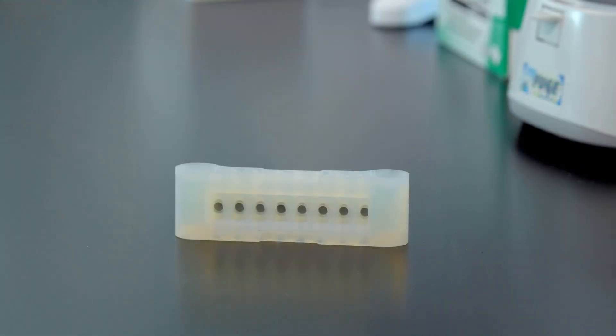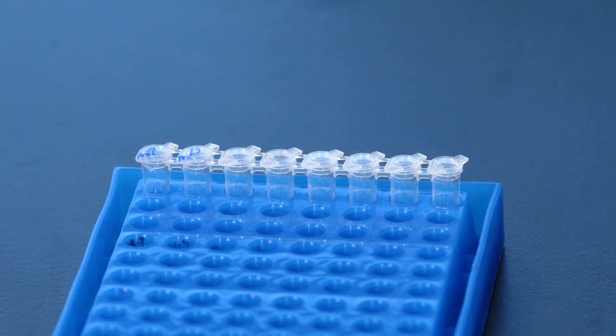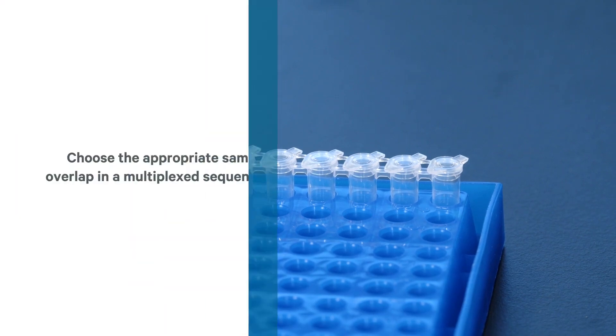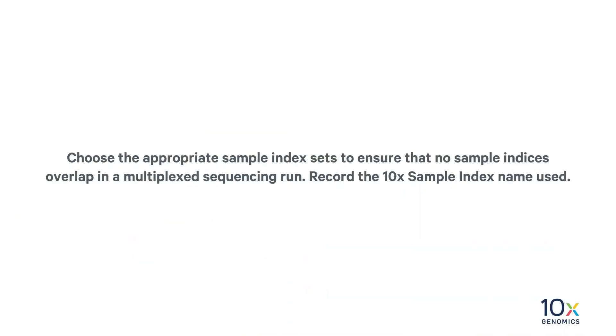We have a 10x magnetic separator and the samples in an eight-tube strip. Choose the appropriate sample index sets to ensure that no sample indices overlap in a multiplexed sequencing run. Record the 10x sample index name used.